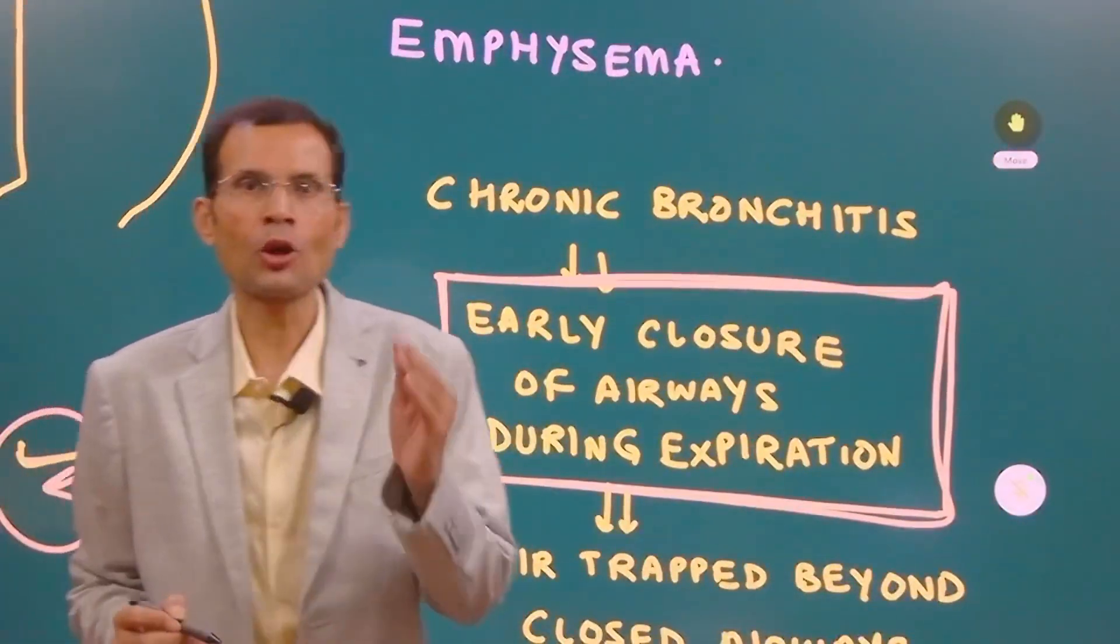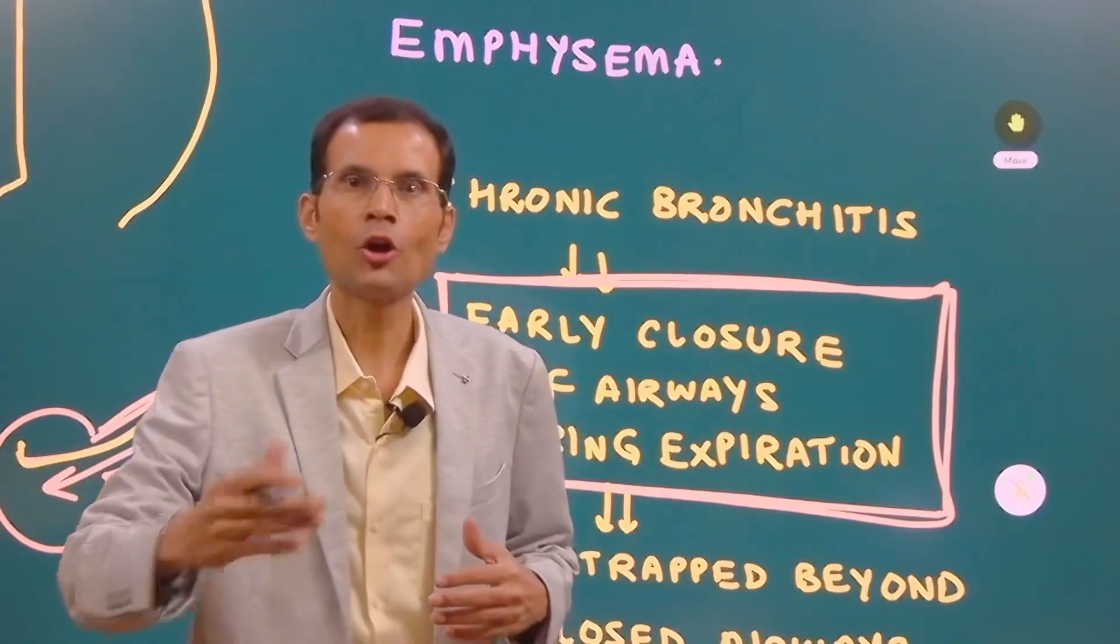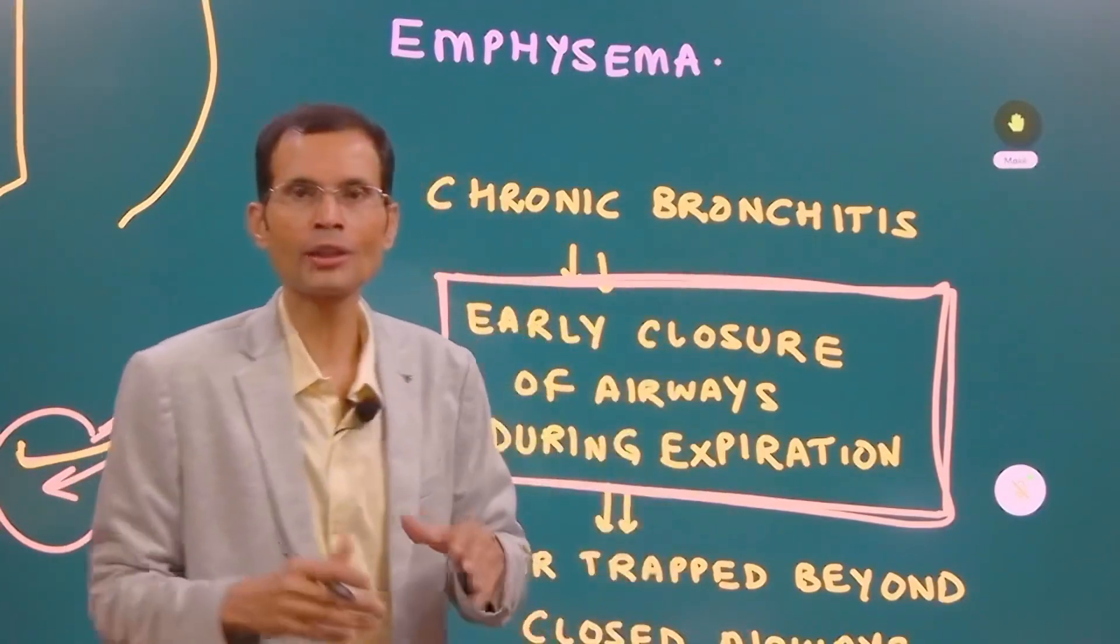It starts with chronic bronchitis. The emphysema is a progression of the disease that is chronic bronchitis.